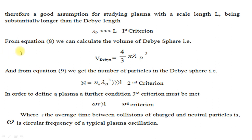From equation number 8, we can calculate the volume of the Debye sphere: V_Debye = (4/3)π·λ_D³. From equation number 9, the number of particles in the Debye sphere is N = n·e·λ_D³ ≫ 1 — this is the second criterion. In order to define a plasma, a further condition — the third criterion — must be met: ω·τ > 1. Here τ is the average time between collisions of charged and neutral particles, and ω is the circular frequency of typical plasma oscillations.